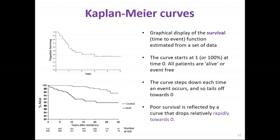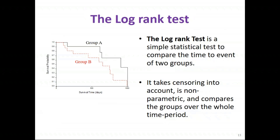On the bottom curve on this slide, at the bottom you'll notice two rows of numbers called 'number at risk.' This gives valuable information — it tells us how many patients are event-free and still at risk of experiencing the event at individual time points. The Kaplan-Meier curves allow us to visually compare survival experience between groups, but don't actually tell us whether that difference is statistically significant.